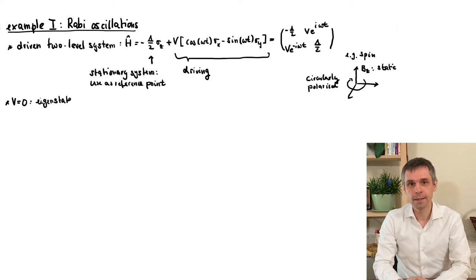Setting the driving amplitude to zero, we end up with a static system, for which the eigenstates are just the basis states, with the two energy-levels arranged symmetrically around zero.